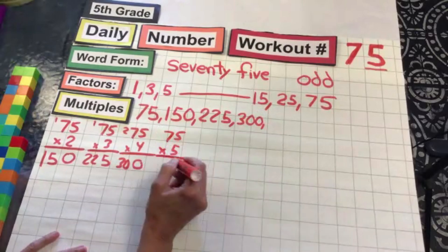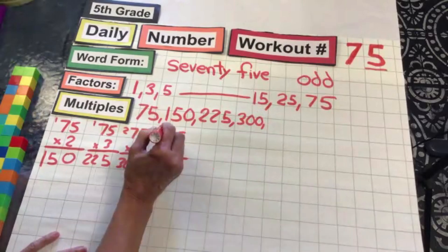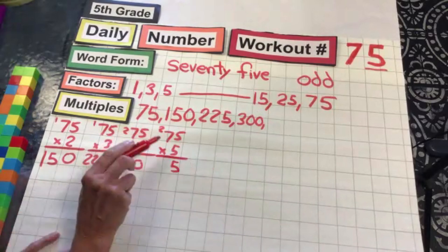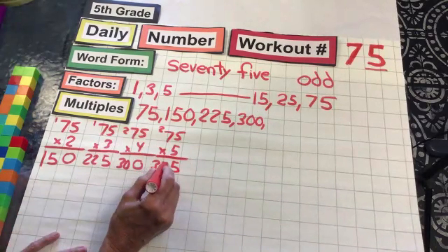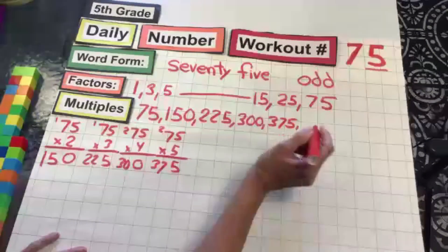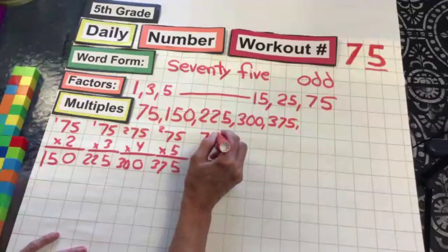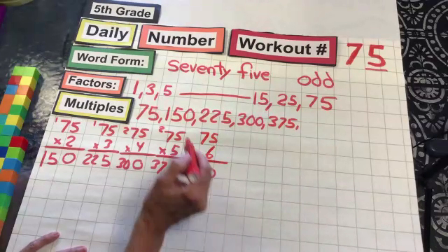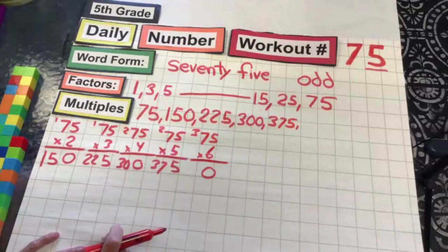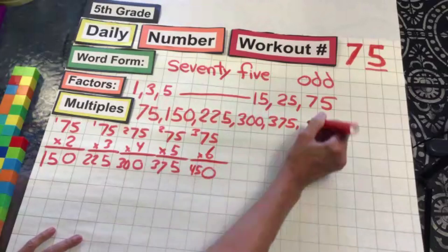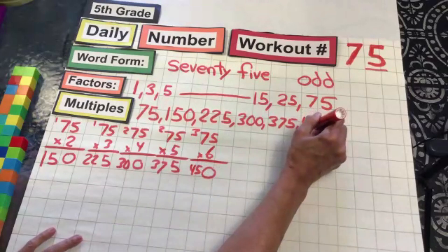So 5 sets of 5. So 5 sets of 49, zero — carry the three. 6 times 7 is 42 plus 3 is 45, four hundred and fifty.